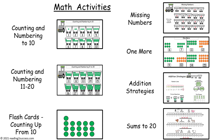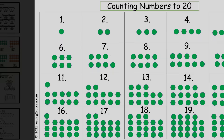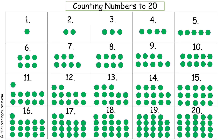The order of the activities that kids will complete are: counting and numbering to 10, counting and numbering 11 through 20, flashcards counting up from 10, missing numbers one more, addition strategies, and strategies and sums to 20. This is a number picture chart that can be printed and should be available for kids to refer to during the activities. The link for all teaching templates in this video is listed in the description section.